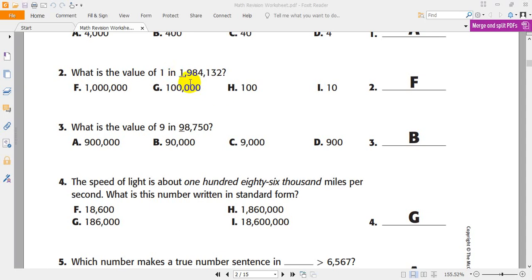So, it's 1,984,132. Again, 1,984,132. The right answer must be F because F will equal 1,000,000.